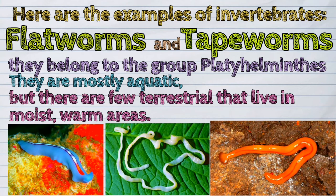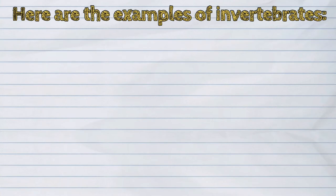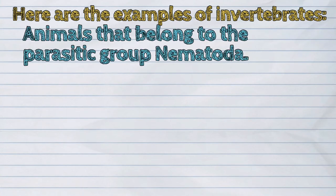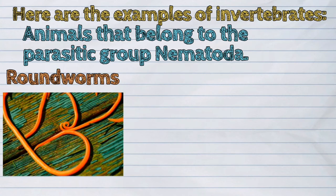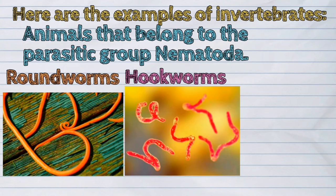The fourth one are the animals that belong to the parasitic group Nematoda. Examples are the roundworms, hookworms, and whipworms.